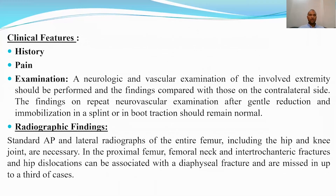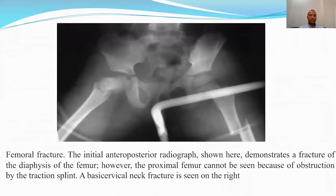For radiographic findings, take standard AP and lateral radiographs of the entire femur including the hip and knee of both the ipsilateral and contralateral sides, especially the hips. As seen in these X-rays, there are femoral shaft fractures, but we must not miss a contralateral fractured femoral neck. We should also clear the ipsilateral femoral neck with X-ray.